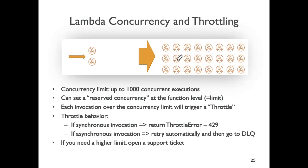There is a concurrency limit: any AWS account cannot have more than 1,000 lambda instances running concurrently — whether they're all the same lambda or different lambdas. Your total number of lambda instances running at any point in time cannot exceed this upper limit of 1,000. You can request that this limit be increased by making a special request to AWS, which is fairly standard for large organizations.